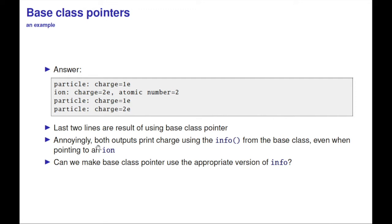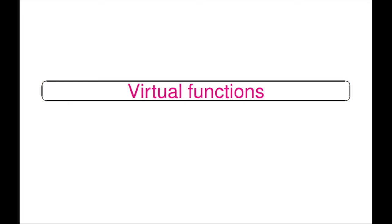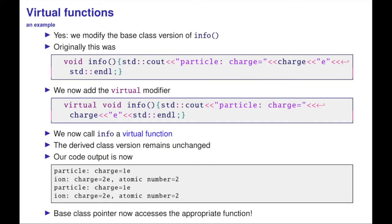The real question is: can we make base class pointers use the appropriate version of info? The answer is yes. The idea is the concept of a virtual function. You modify the base class version of info—initially it was this—and just add one word in front: virtual void. That's called a virtual function. The derived class function remains unchanged. If I now only make those changes to the code, it will call the right info function. Essentially, if a function is virtual, the overridden function will be called with a base class pointer, which is quite a neat trick.